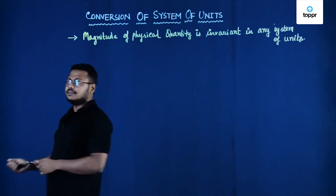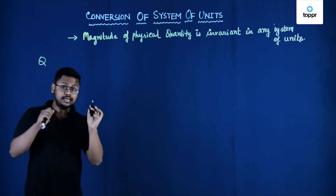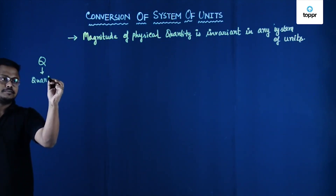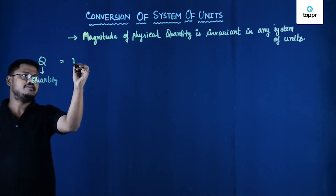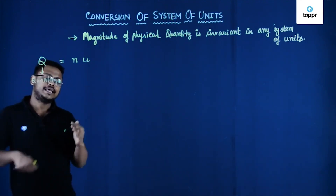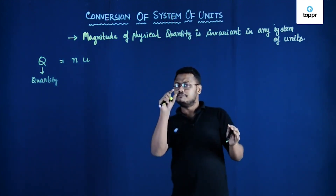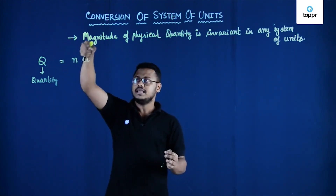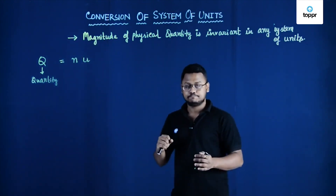Let's write a physical quantity as capital Q. So Q is the physical quantity, and it can be written in terms of a numerical value times a system of unit. For example, if the mass is 5 kg, then N represents 5 — the numerical value — and U represents the unit, that is kg.